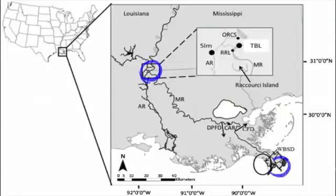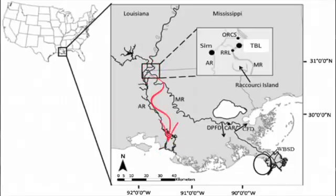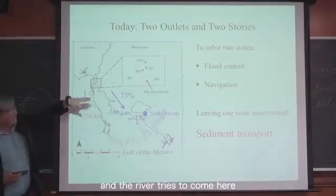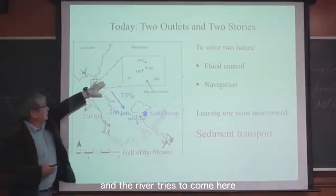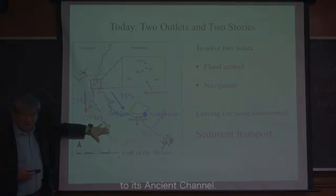Here to here is 300 miles. Here to here is 150 miles. Because of the shorter distance, the gradient is steeper, and the river tries to come here to its ancient channel.